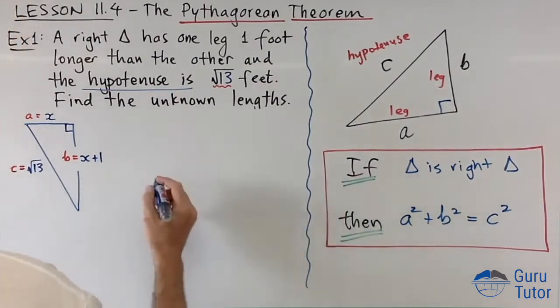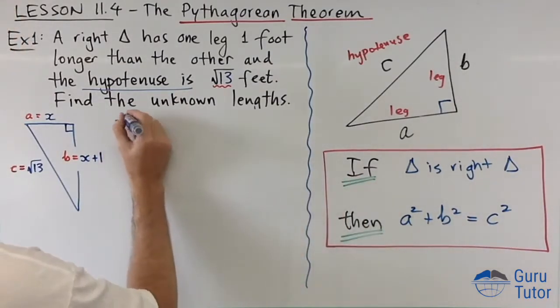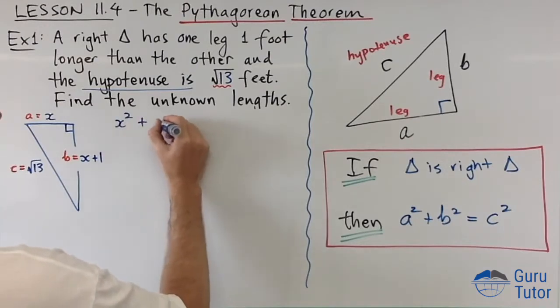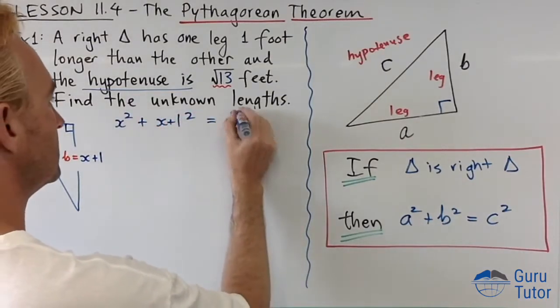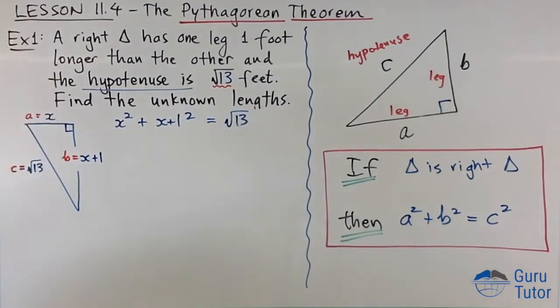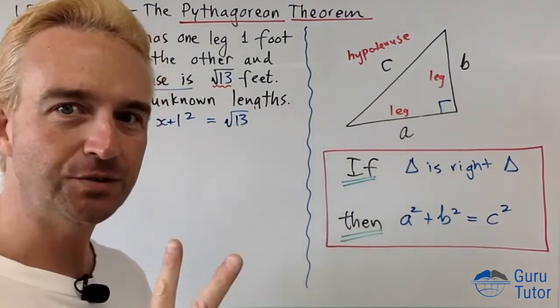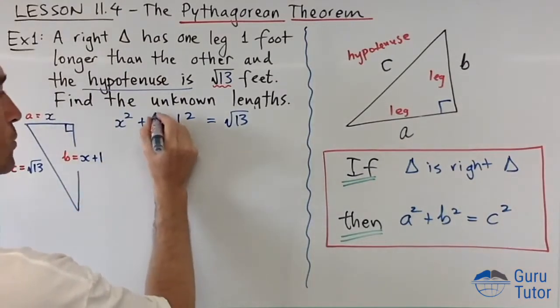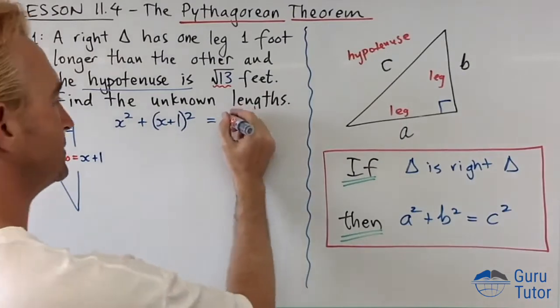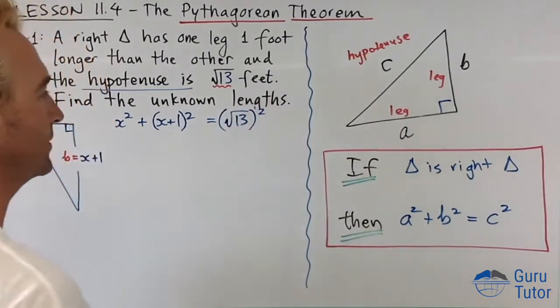Now let's put these into the equation: a squared, x squared, plus b squared, x plus one squared, equals root 13. Is that correct? No, it's not. There's two things wrong with that. X plus one, the x plus one is all being squared, so we need brackets around there, and I forgot to square that as well. Okay, now let's move on.